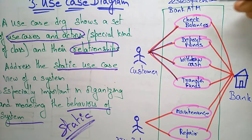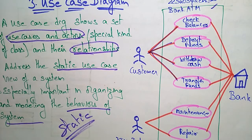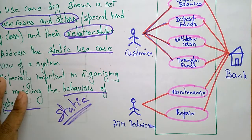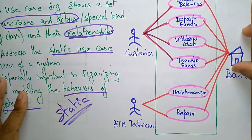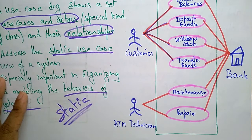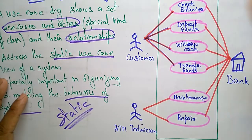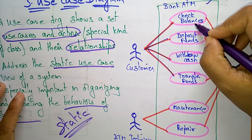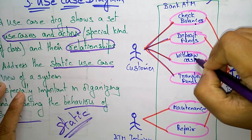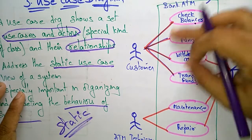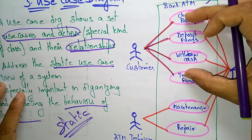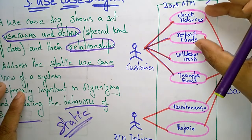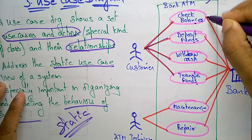Here is an example: a Bank ATM system. The actors are the Customer, ATM Technician, and the Bank — three actors in total. The customer goes to the ATM center, where they can check the balance by logging into their account, deposit funds, withdraw cash, and transfer funds. These actions that the customer performs are represented as use cases.